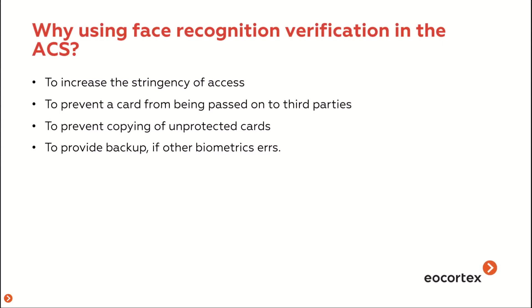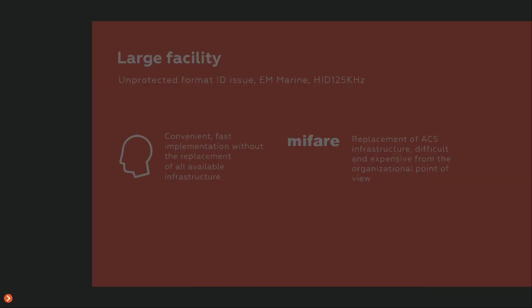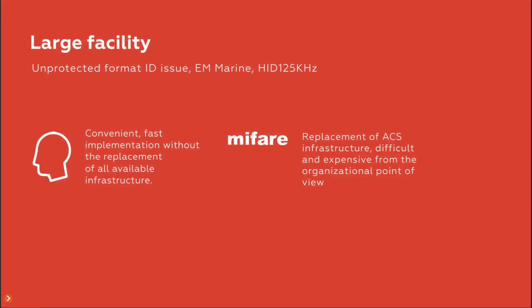If the security level must be very high and all ACS errors must be prevented, face recognition must be used as a control factor. Access is only granted when both face recognition and card reading coincide. For example, in a factory where employees use access cards to calculate working hours, those cards might be given to colleagues or relatives to gain access.